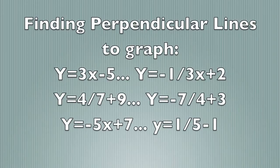Now, how do you find a perpendicular line? Well, it's very similar to finding parallel lines. Just like parallel lines, you would change the b, the y-intercept, to a different number. Negative and positive doesn't matter. But unlike parallel lines, you also have to make the m, the slope, its negative reciprocal.